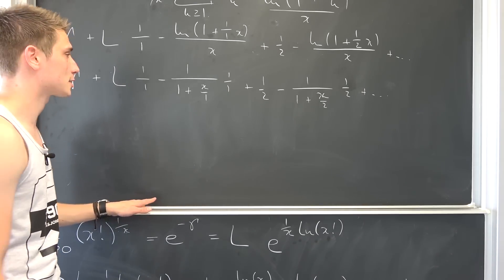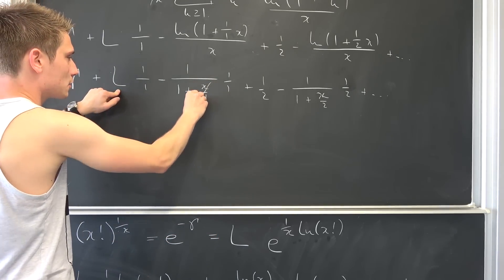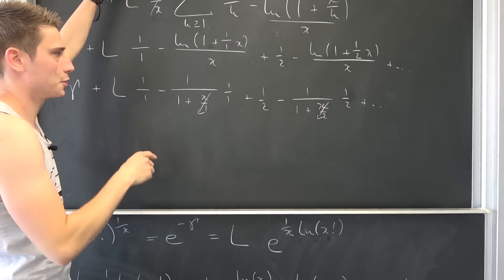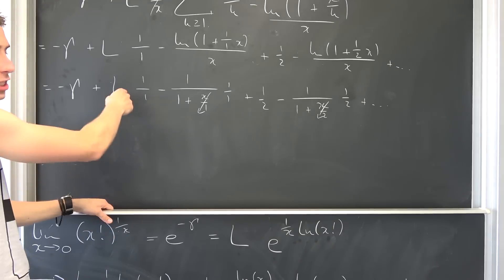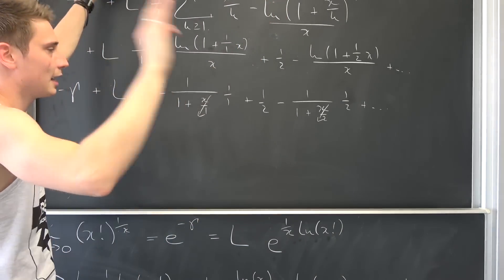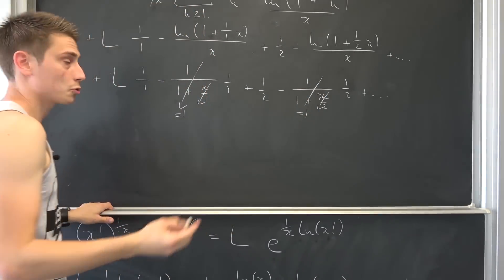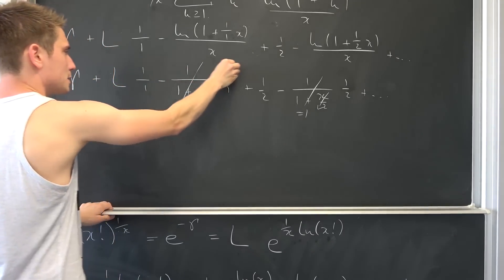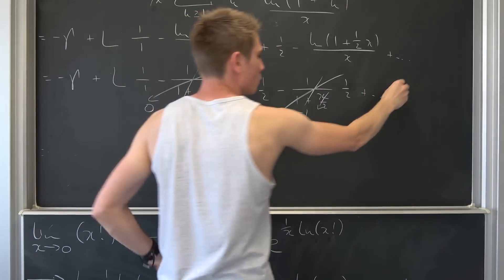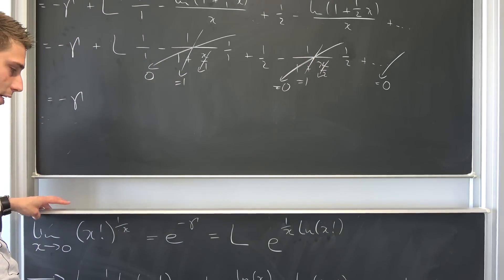Applying the limit as x→0: each x/k → 0, so every term becomes 1/k − 1/k = 0. The entire sum collapses to zero, leaving us with negative γ from the earlier part. Since our original limit was e to the power of that expression, the final answer is e^(−γ), the negative Euler–Mascheroni constant.